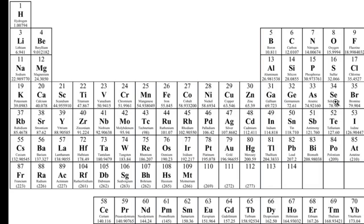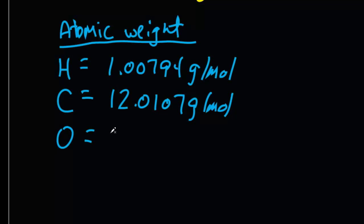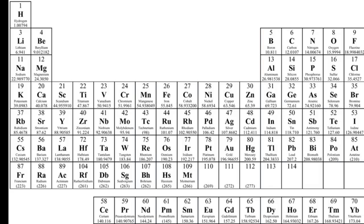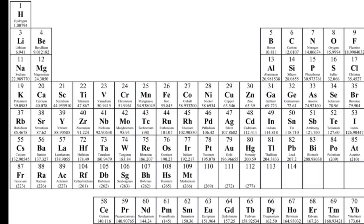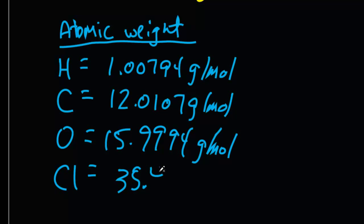If we have oxygen, well, oxygen says right here 15.9994 grams per mole. And so on. If we had, let's say, chlorine, we'll just do one more. Well, just look at the periodic table for the atomic weight, and chlorine is going to be 35.4527 grams per mole. That's atomic weight.